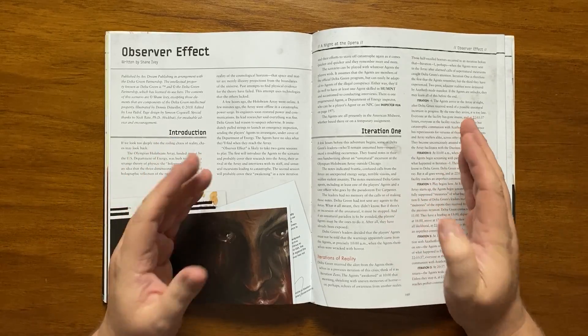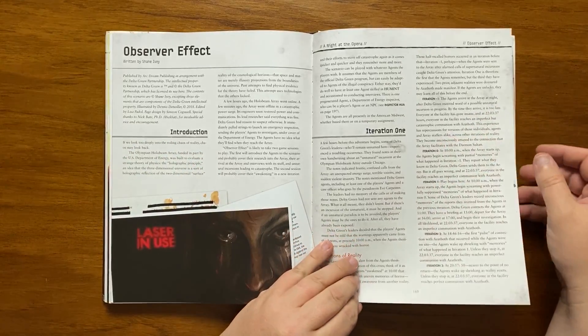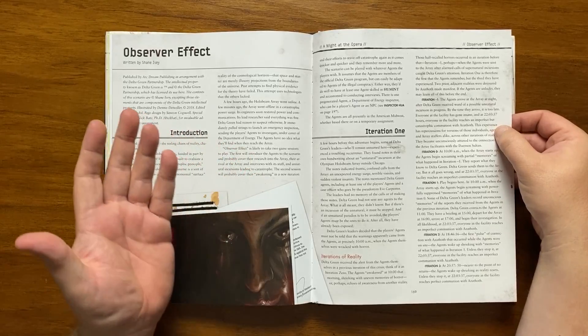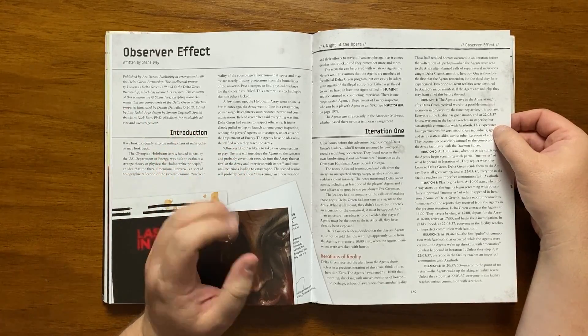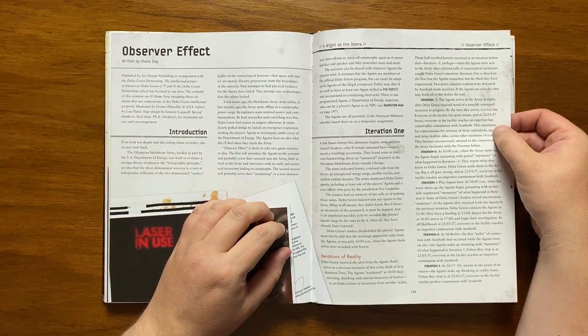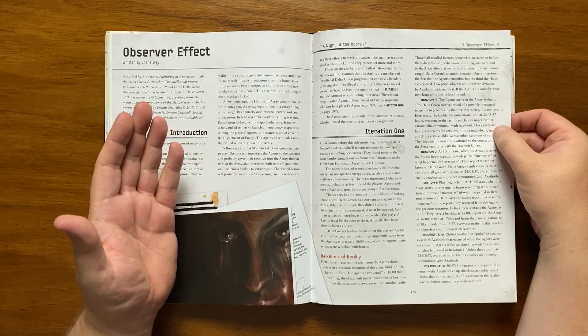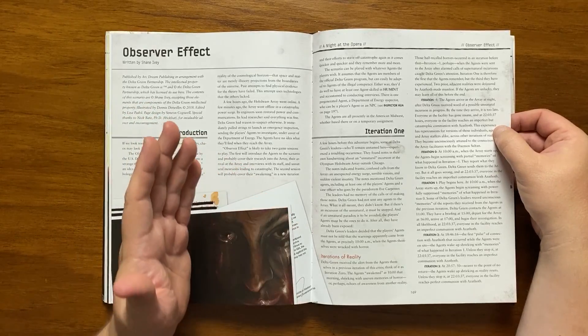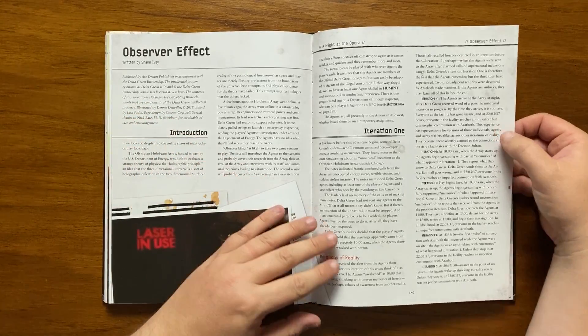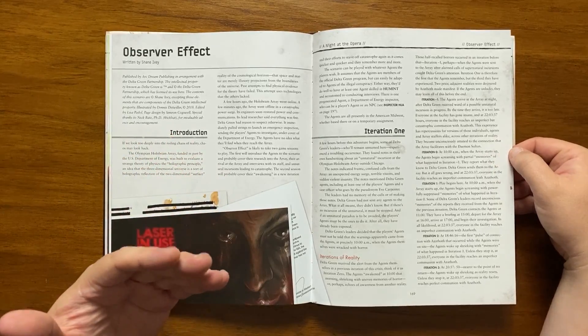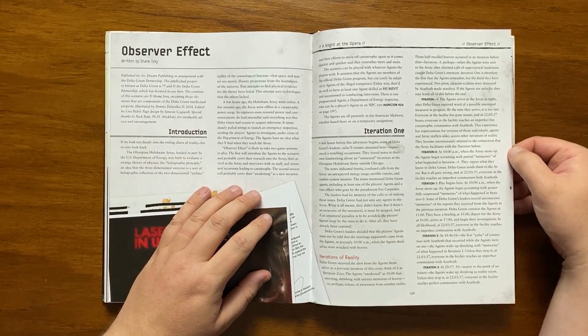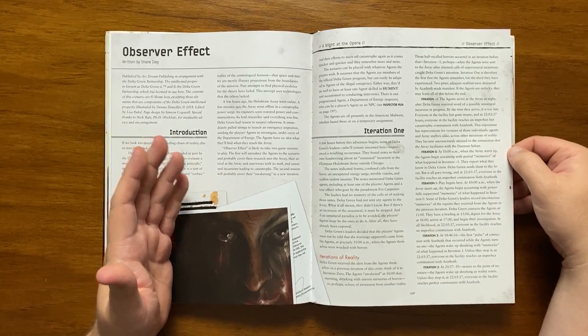It lays out the details of Iteration minus 1, the agents arriving at the array at night, but too late as everyone there has gone insane at 2203 as they had semi-contact with Azathoth. This has repercussions for everyone at the array at that time and unconsciously attunes them to the array. Iteration 0 is the players waking up, reporting what they know to Delta Green, going to the array and everything going belly up at 2203 when contact with Azathoth is made.